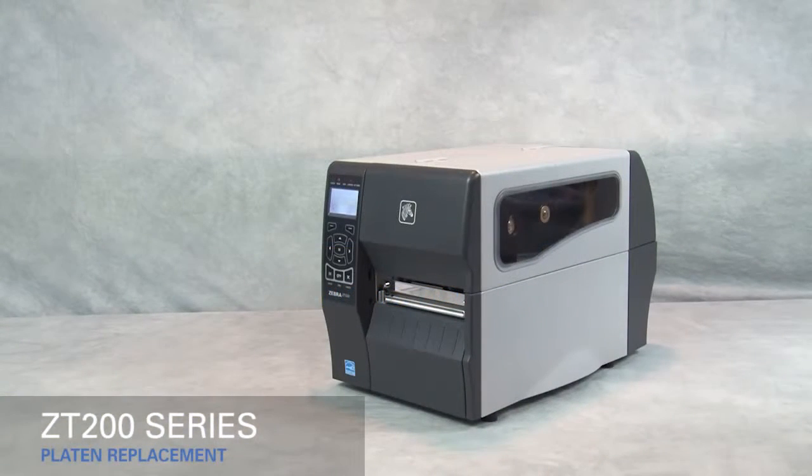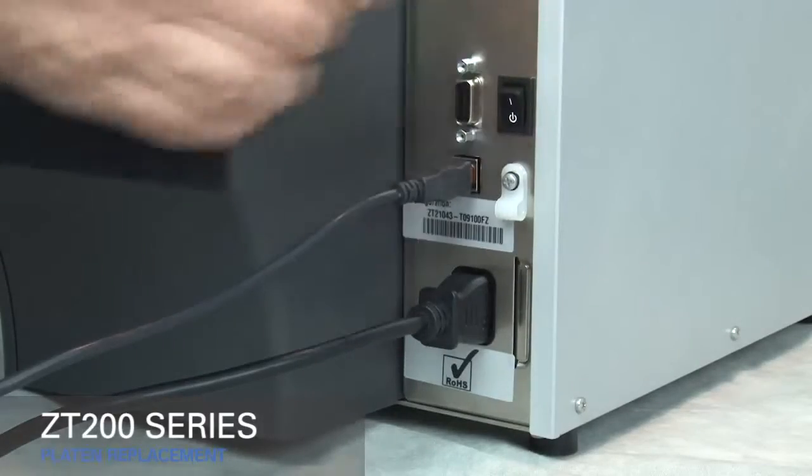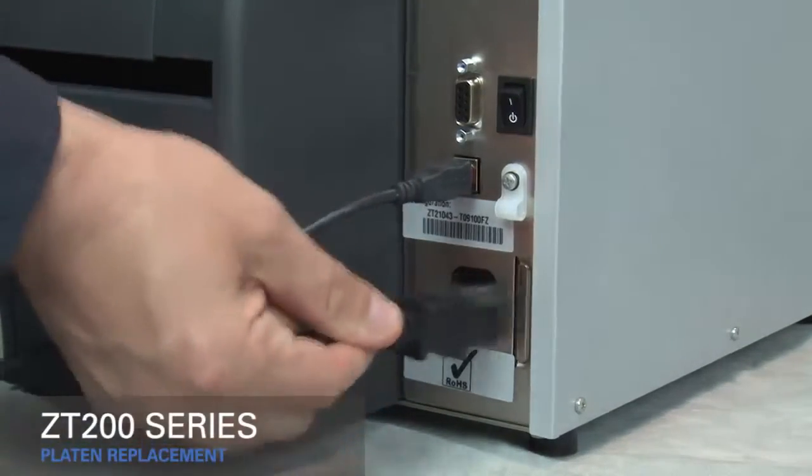Replacing the platen roller on the ZT200 series printers. Turn off the printer and disconnect the power cord and data cables.